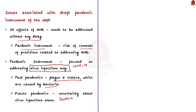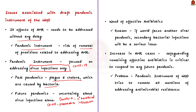Even if the world faces another viral pandemic, secondary bacterial infections will be a serious issue. For example, during the COVID-19 pandemic, many hospitalized people required treatment for secondary bacterial infections like pneumonia. To treat these bacterial infections, it requires effective antibiotics. But as we saw earlier, antimicrobial resistance keeps on increasing. So, it suggests that safeguarding the remaining effective antibiotics is critical in responding to any future pandemic. But the problem is that instead of addressing this AMR issue, the pandemic instrument of WHO tries to remove all mentions of addressing antimicrobial resistance.